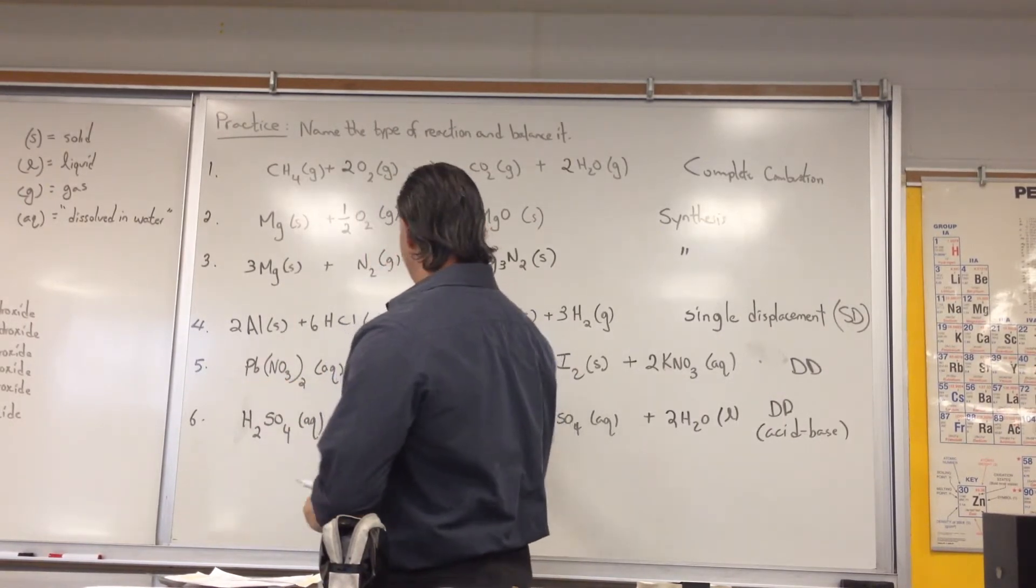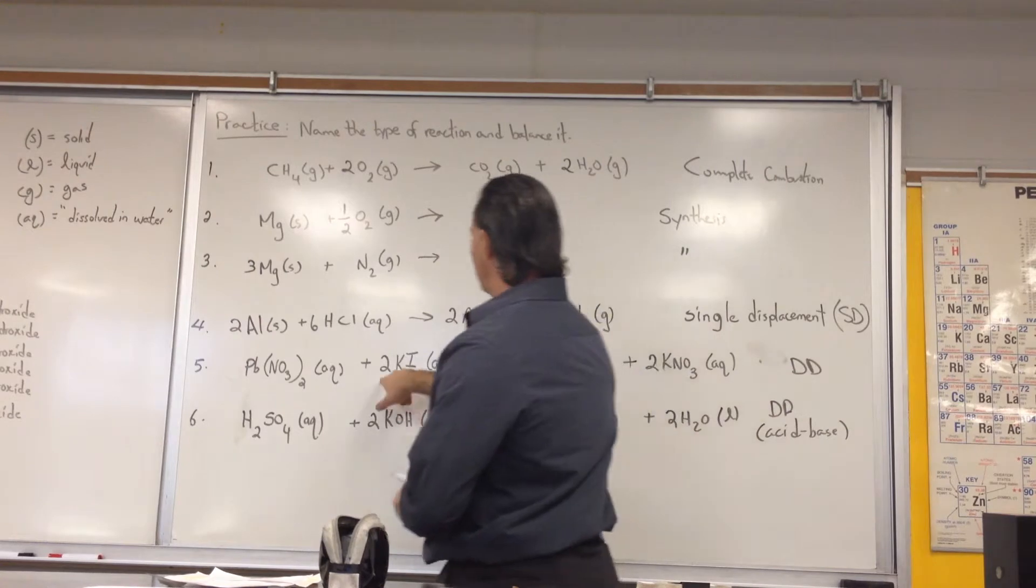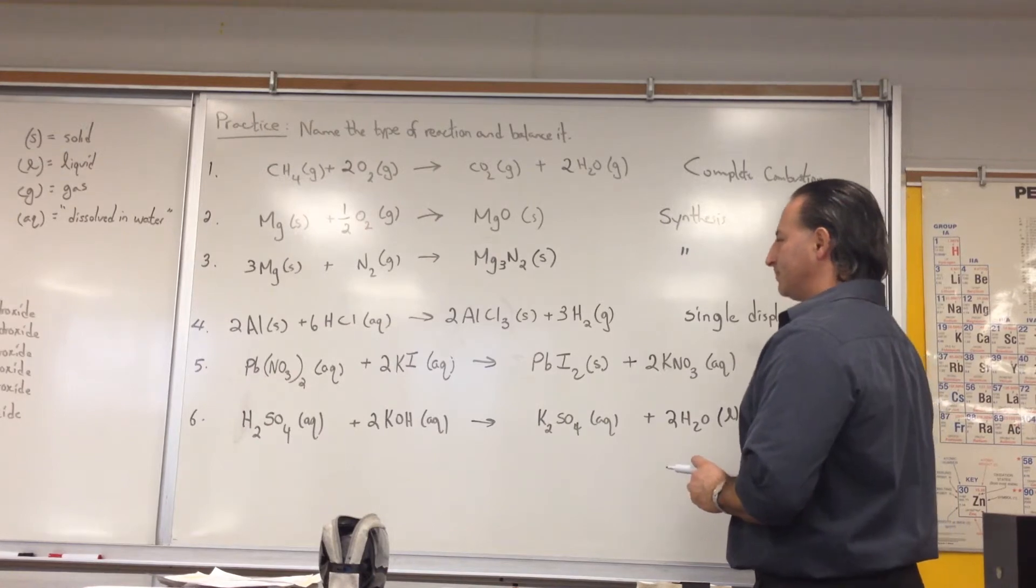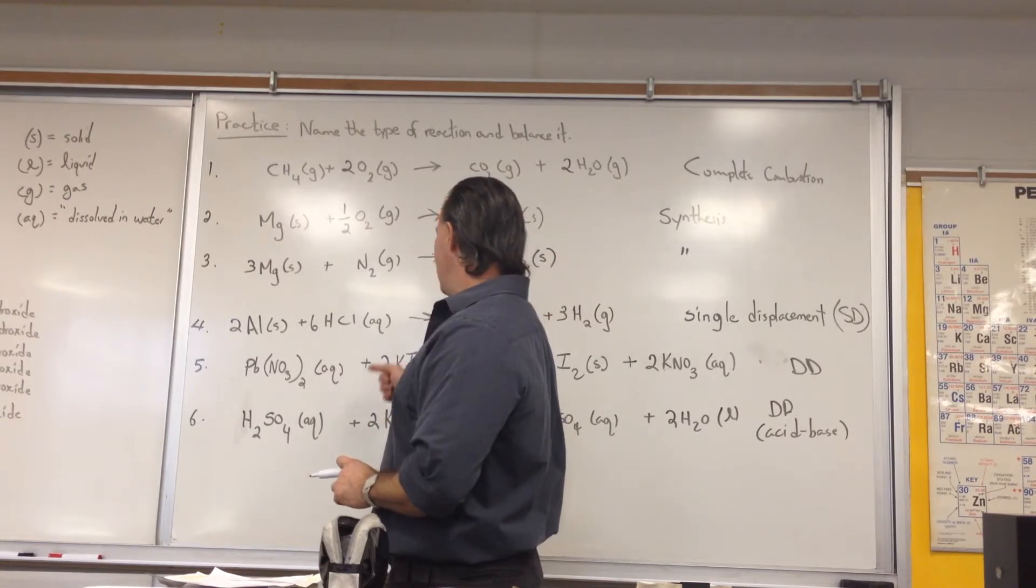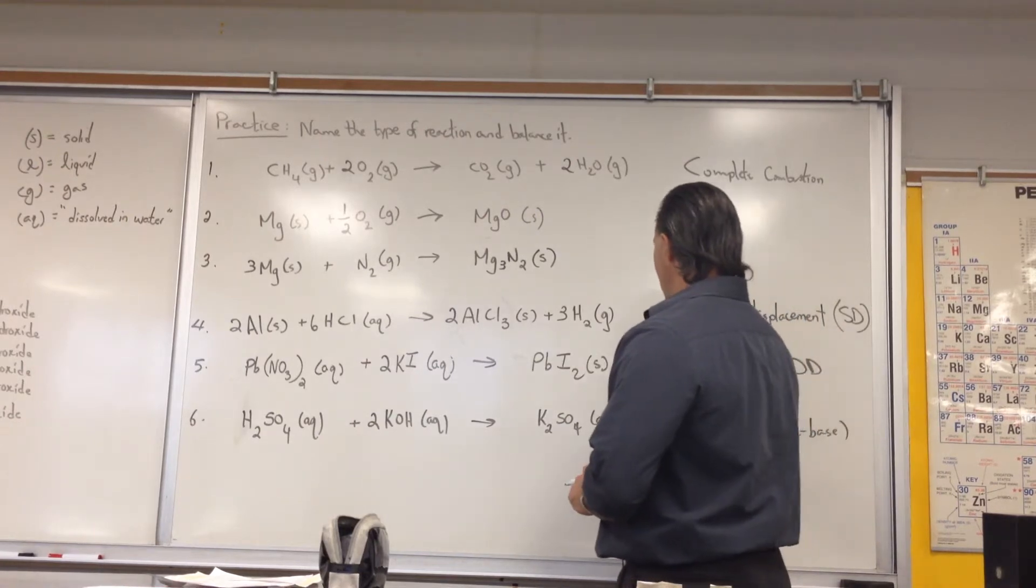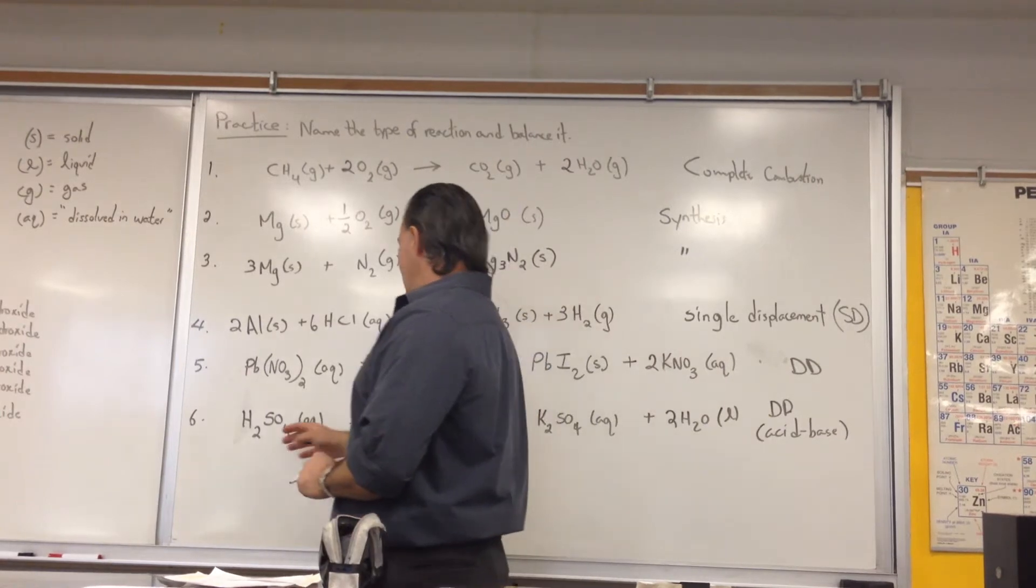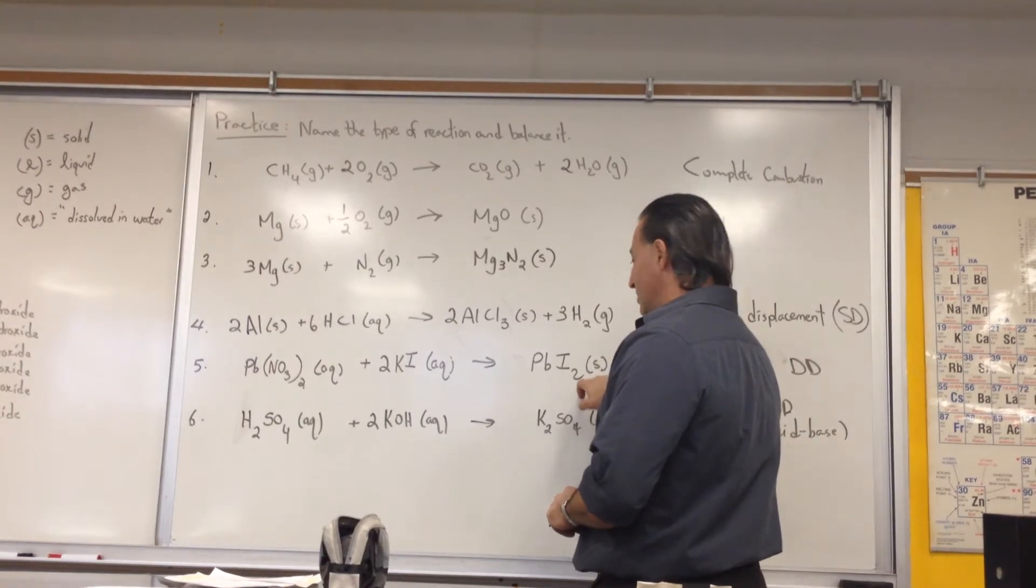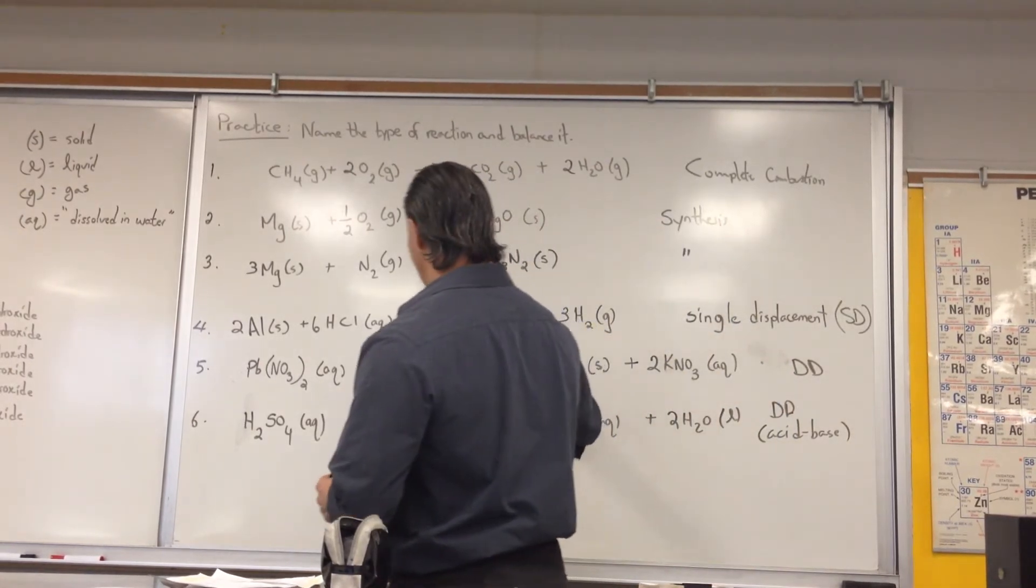Now let's check our equation: one lead atom, one lead atom; two nitrates, two nitrates; two potassiums, two potassiums; two iodides, two iodides. Balances perfectly. This is a double displacement reaction. The lead is trading places with the iodine, and the potassium is combined with the nitrate, although the potassium nitrate remains soluble. When you see solid in the products, you know that a reaction has taken place because a solid is forming.